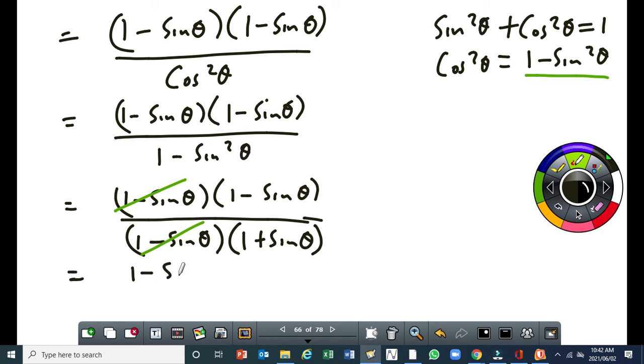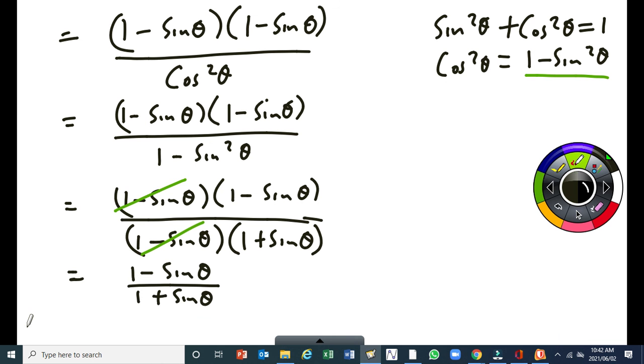so I will be left with 1 minus sin θ over 1 plus sin θ and then I can say therefore the left hand side is equal to the right hand side. Alright so it's application of algebra and also in terms of factorization your knowledge of factorization of trinomials, the perfect square trinomial, the difference of two squares is required when you are doing trigonometry.